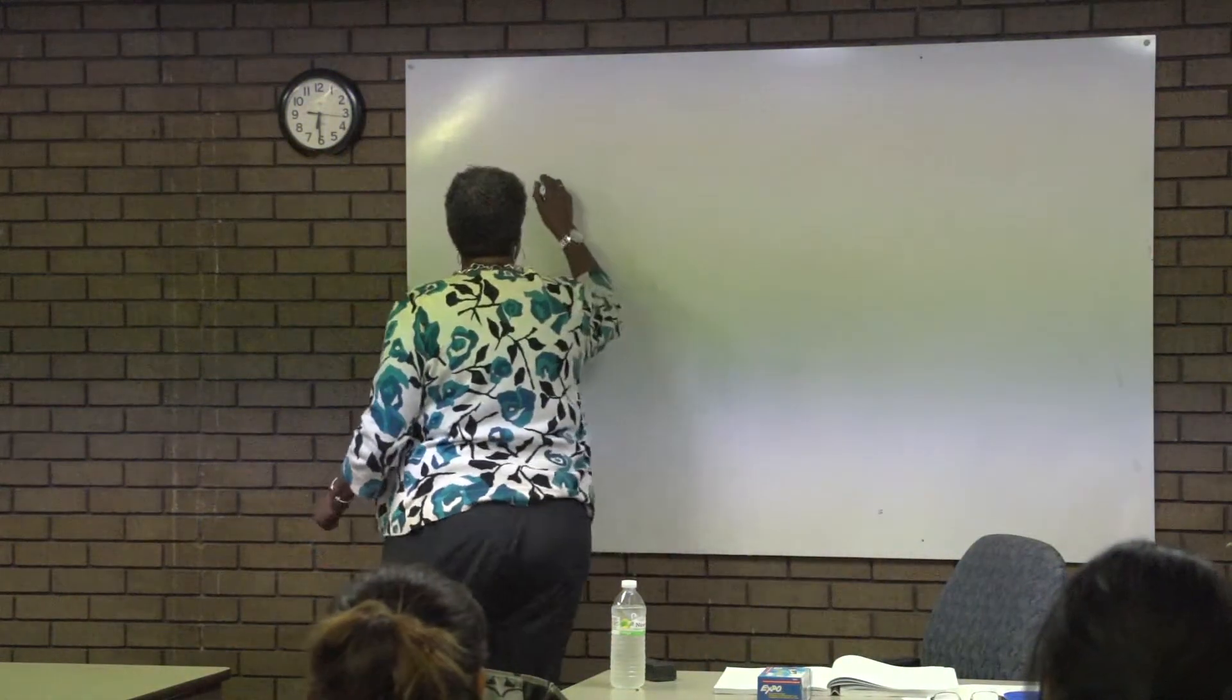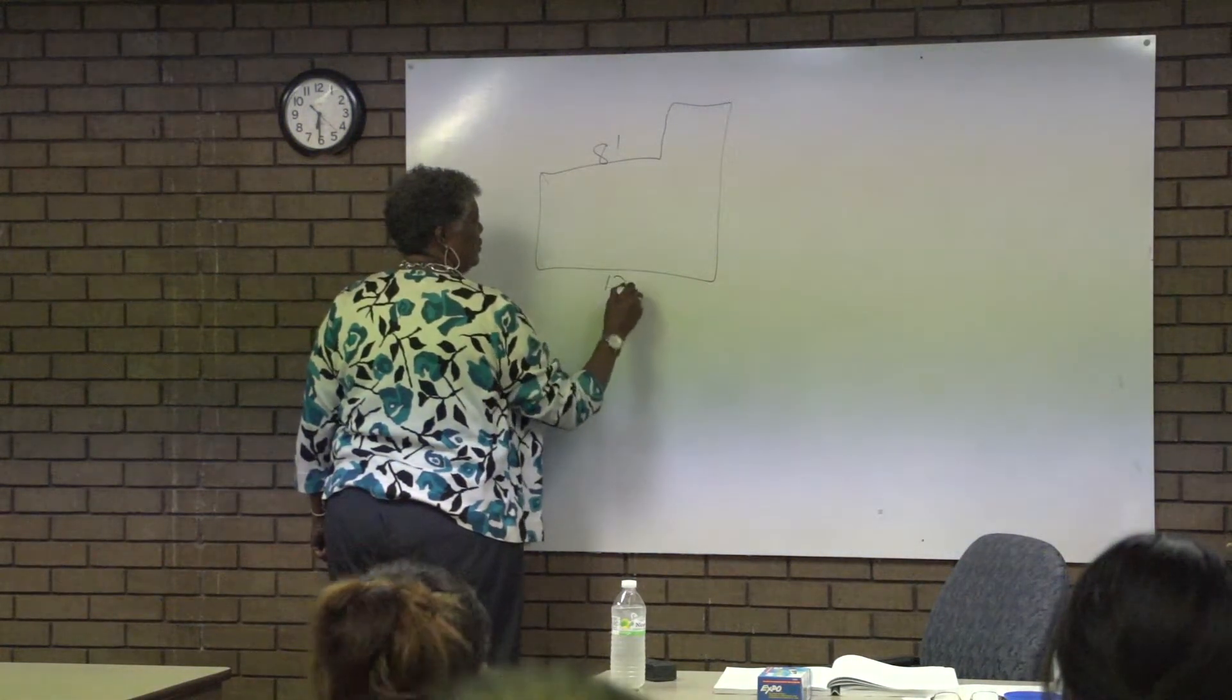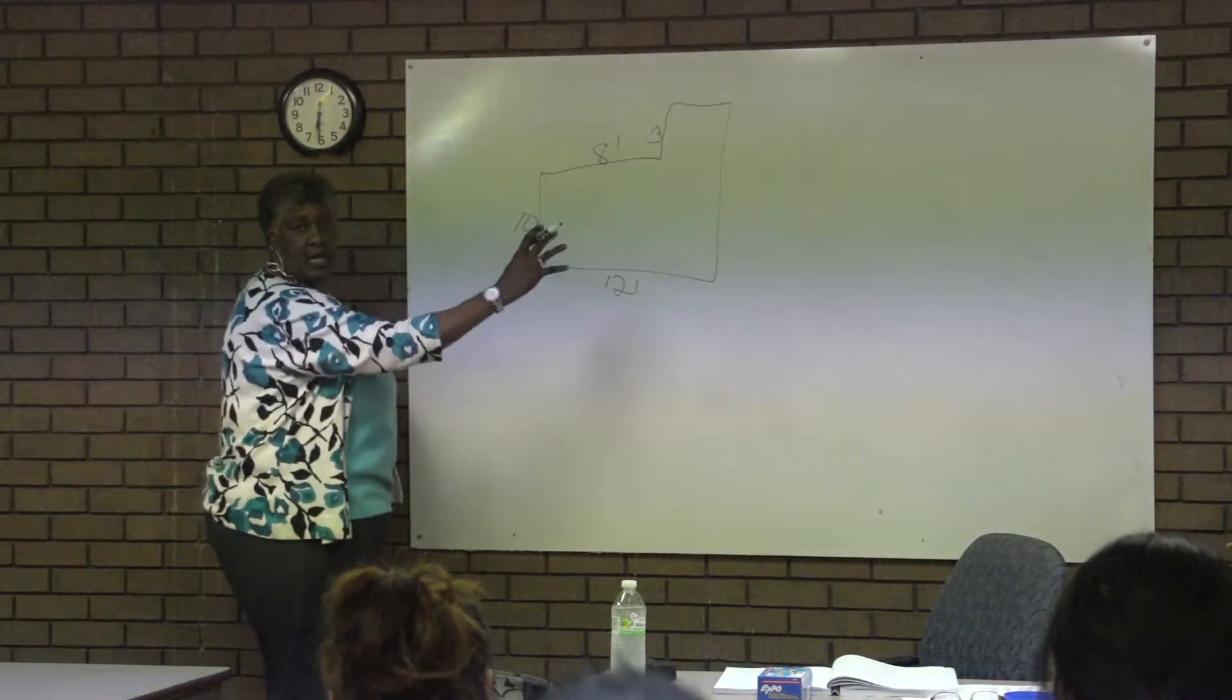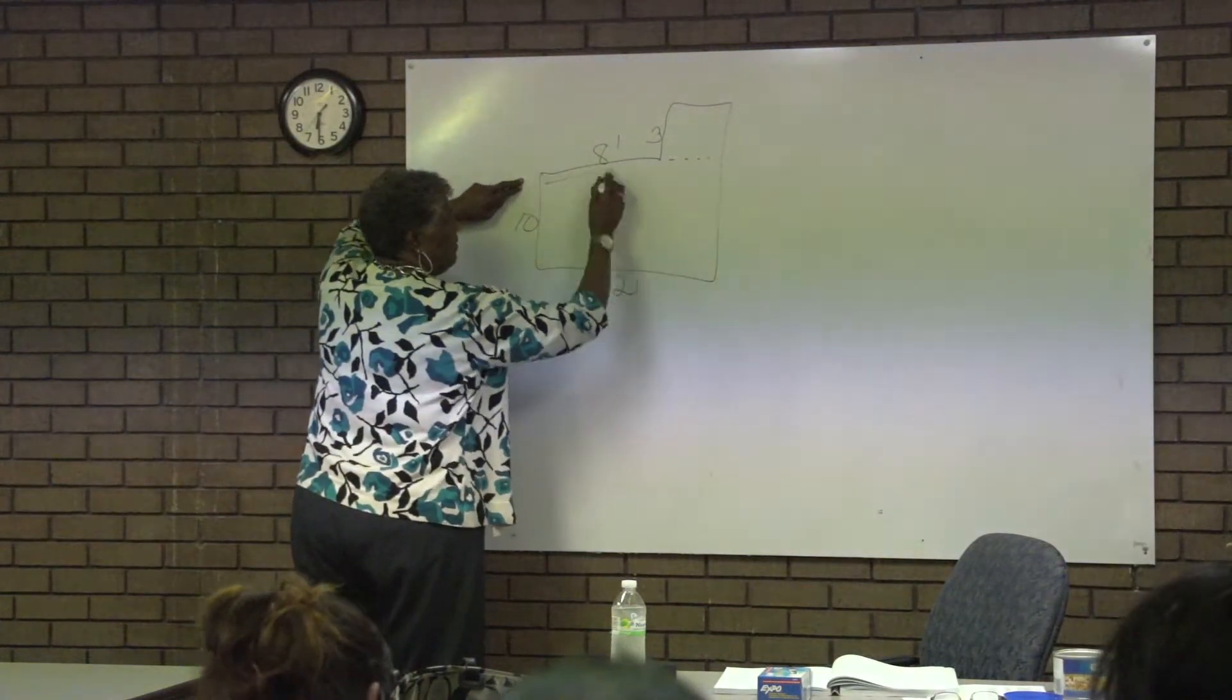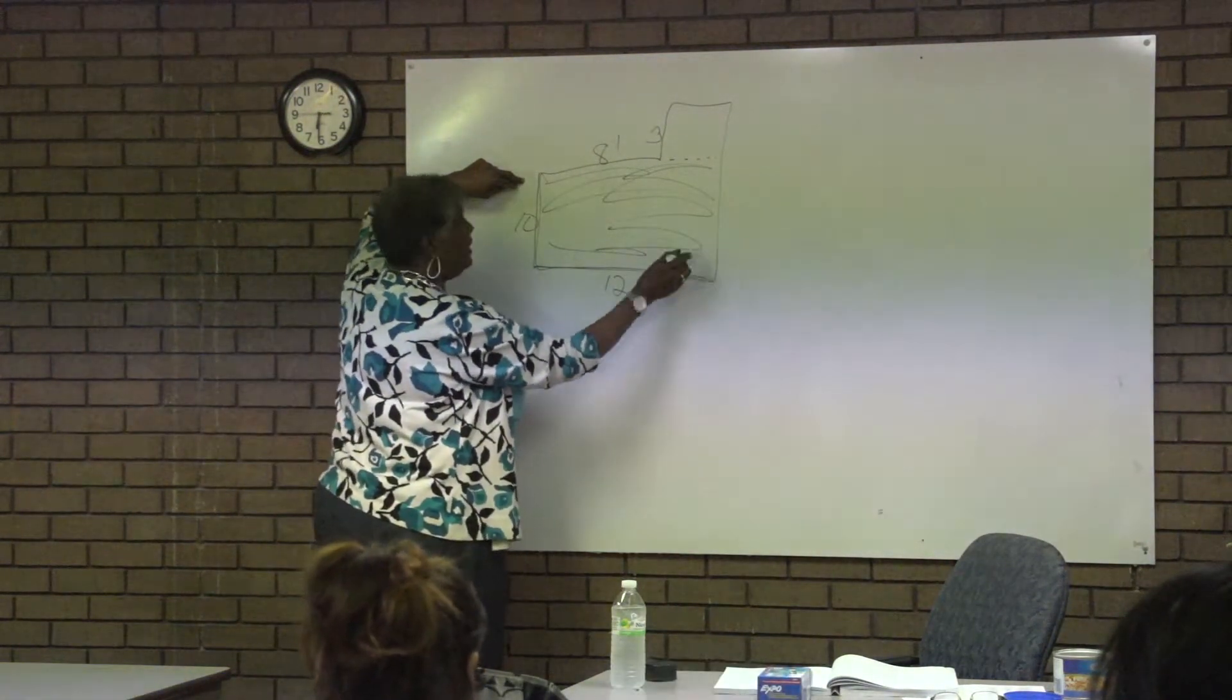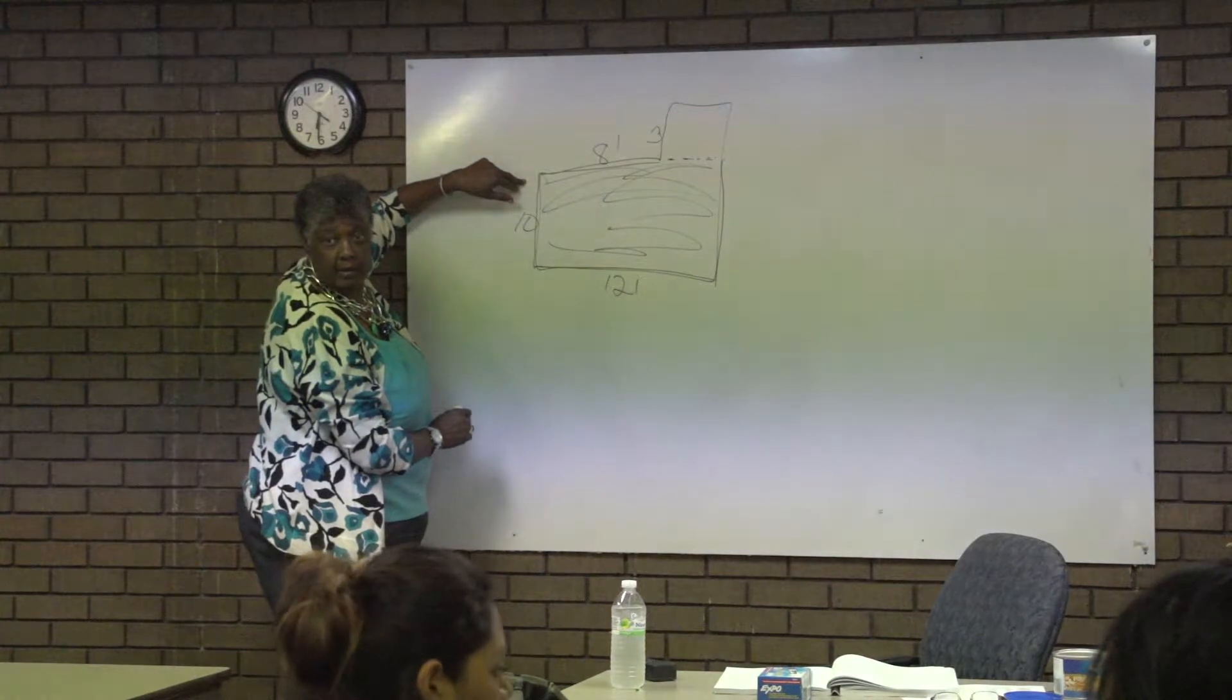Make sense? Okay. If I want to find the area of that big space there, this was 8, this is 12, 3 at the top. This is 3, and what's this? Area is side times side. If I do 10 times 12, I'm only getting this space in here. 10 times 12 is only this space here. Follow that?